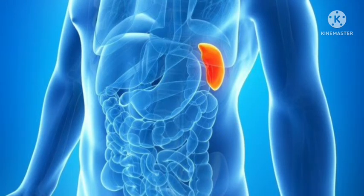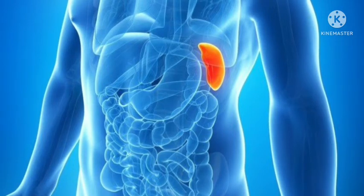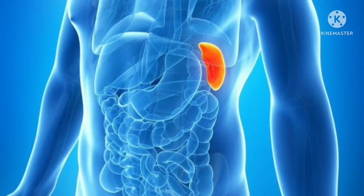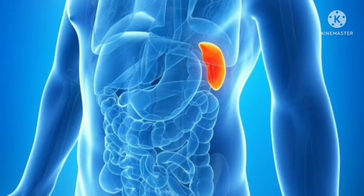Spleen is an organ which has lots of functions. I am just telling you some of them. First, spleen transforms the body fluid. It also transforms the chi, meaning life force or energy. It holds the organs in our body and it generates blood too. There are lots of functions of spleen.